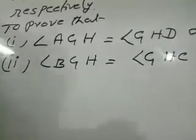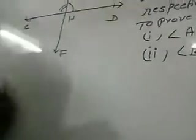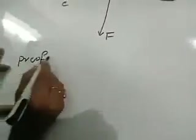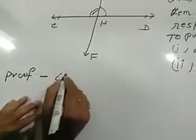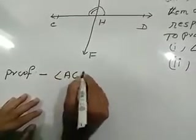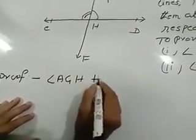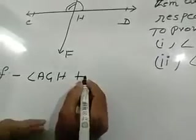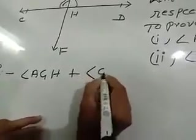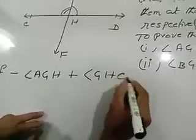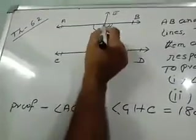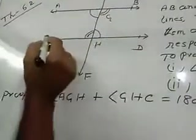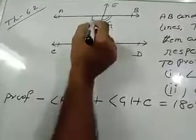Let us start the proof. Angle AGH plus angle GHC is equal to 180 degrees. You see, angle AGH plus angle GHC.